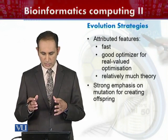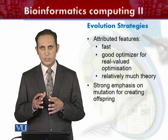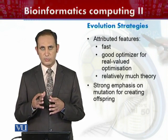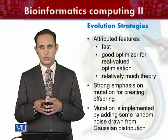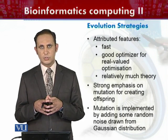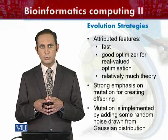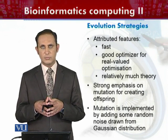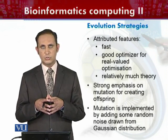These types of evolution strategy algorithms have a strong emphasis on mutations for creating individuals, so mutation always has a strong focus as a genetic operator. Mutation is implemented by adding some random noise drawn from a distribution — Gaussian, Levy, or exponential — but evolution strategy algorithms especially focus on the Gaussian distribution for the mutation operator.